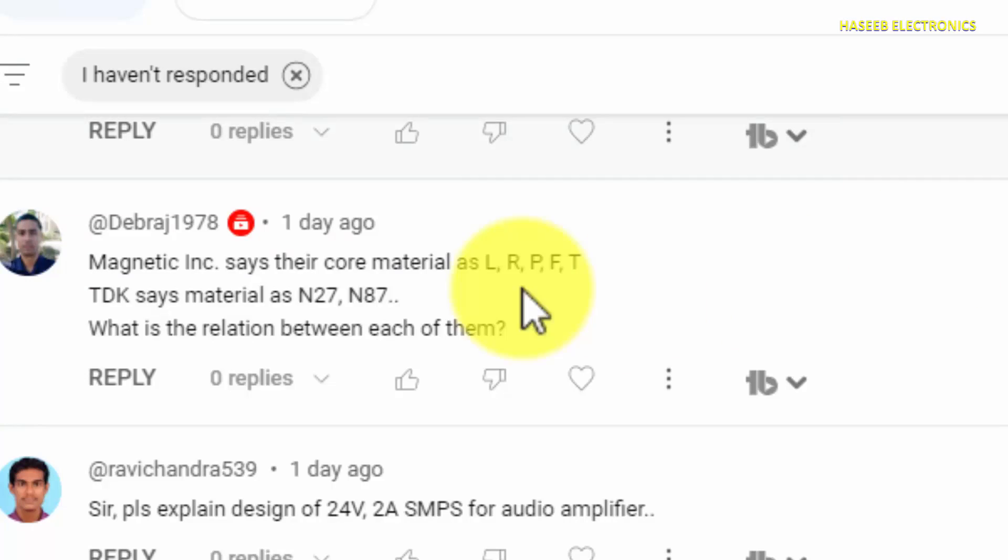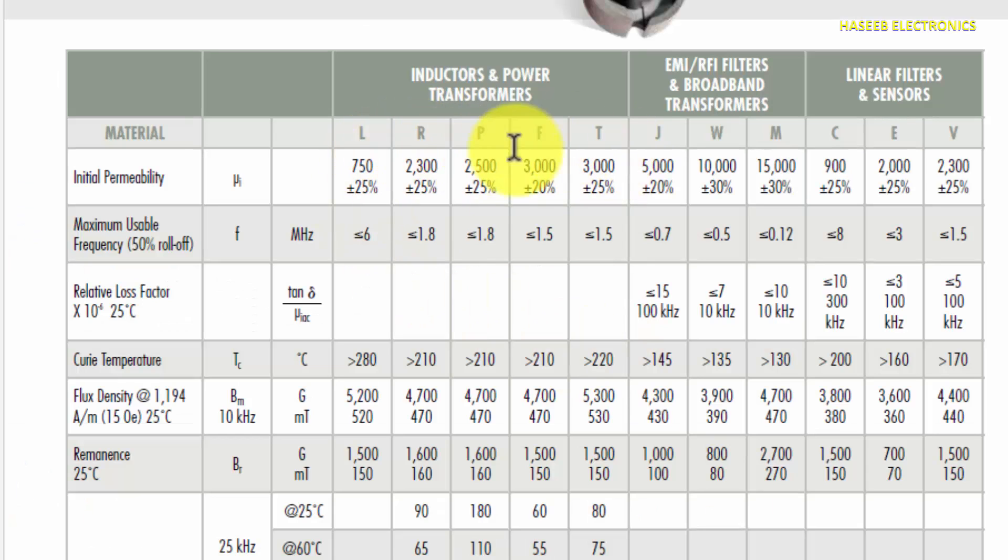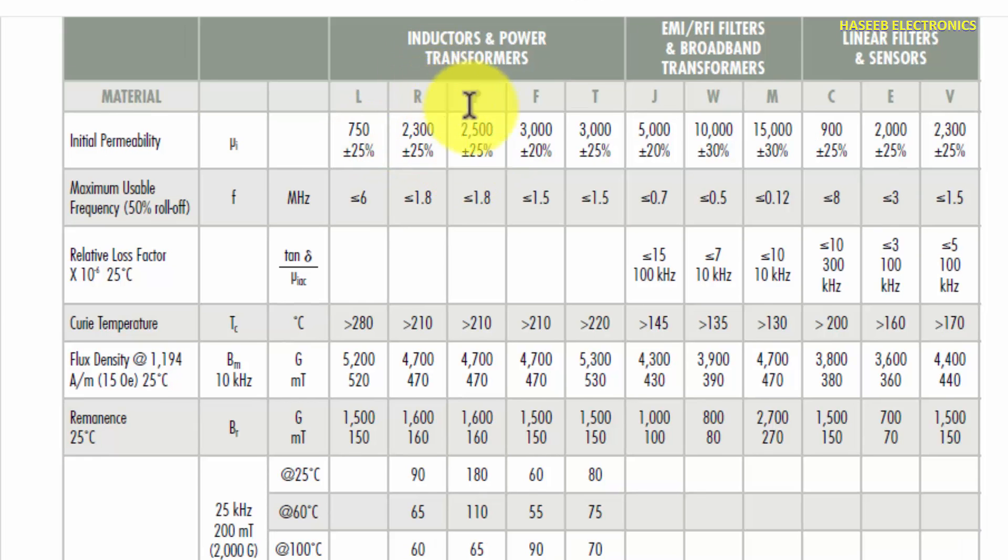So for cores, Magnetics Incorporation says their core material L R P F T. This is Magnetics Incorporation catalog. Here is material type: L, R, P, F, T, J, W, M, C, E, V. In the second row, it is initial permeability. This one: 750, 2000, 2300, 2300. So each material has its own permeability value. That is called initial permeability. It is the basic key point for categorization of any ferrite core.